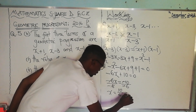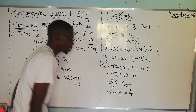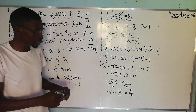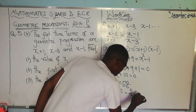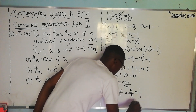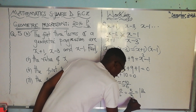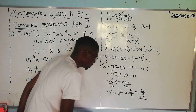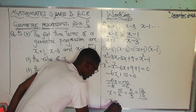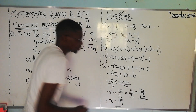10 over 6 can be reduced to 5 over 3 by dividing numerator and denominator by 2. This can also be written as the mixed fraction 1 and 2 over 3. Therefore, x equals 1⅔ or 5 over 3 as an improper fraction.